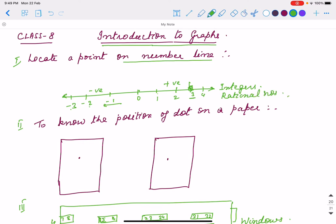But suppose you have to know the position of any dot on a paper. Suppose this is a paper and I put here a dot. So maybe someone will say that it is on the upper side. Then how do we know what is the exact position?